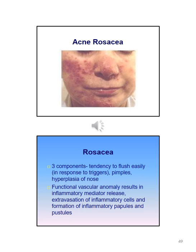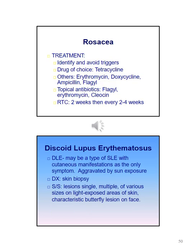Three key components of acne rosacea include: the tendency to flush easily especially in response to triggers, pimples, and hyperplasia of the nose. Treatment includes identifying and avoiding triggers. The drug of choice is tetracycline; other medications that may be prescribed include erythromycin, doxycycline, ampicillin, and Flagyl. Topical antibiotics may also be prescribed. Monitor these patients every two weeks, then every two to four weeks as symptoms improve.